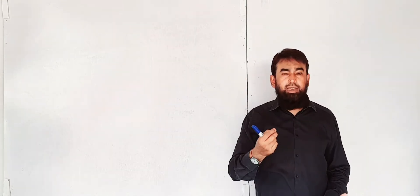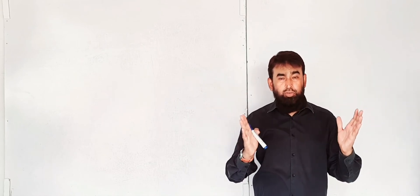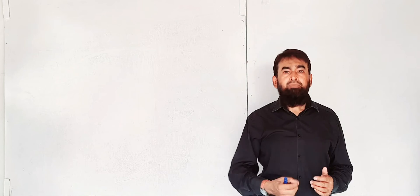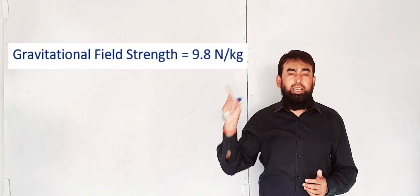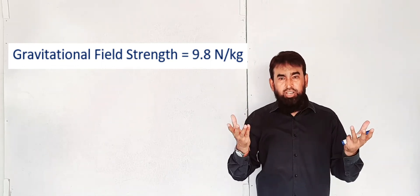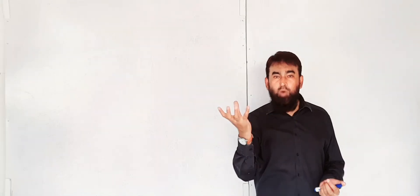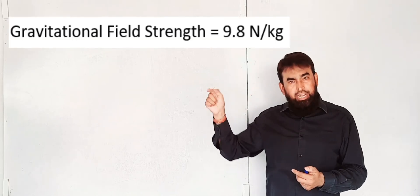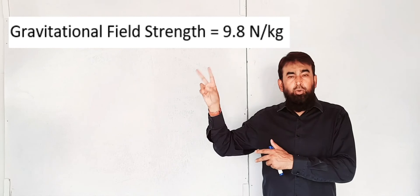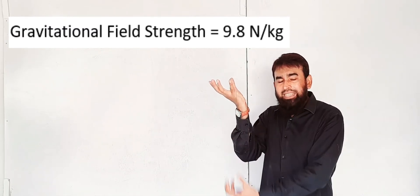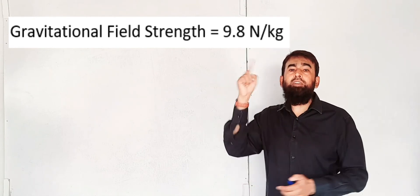You must also keep in mind the gravitational field strength near the surface of the earth. The gravitational field strength — the force at which gravity is pulling any body towards itself — is approximately 9.8 newton per kg. This means if you have a body of mass 1 kg, the force the earth applies on that body is equal to 9.8 newton. So 9.8 N/kg means a mass of 1 kg is being pulled by the earth with a force of 9.8 newton.